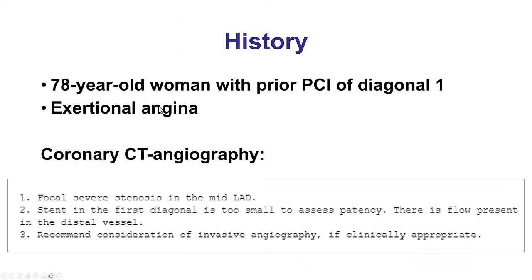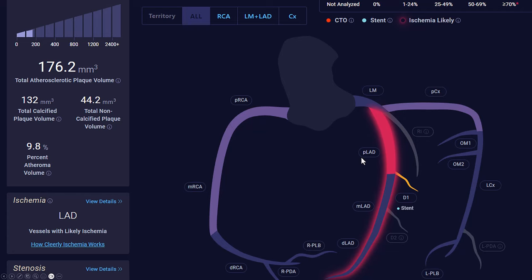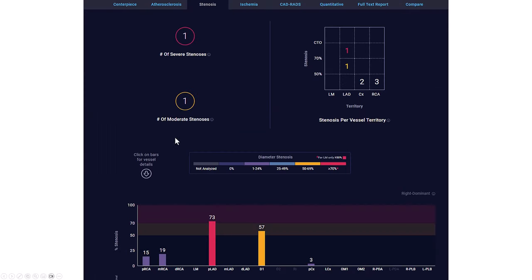The patient was a woman who presented with exertional angina. She had a previous stent in the diagonal, and she underwent a coronary CT angiogram that showed a focal severe stenosis in the mid-LAD, with the stent in the diagonal being too small to assess patency. The CT report clearly shows a significant lesion in the LAD — a severe, more than 70% stenosis.